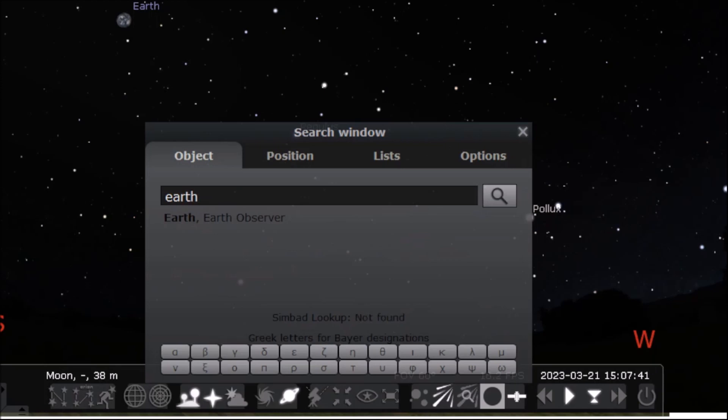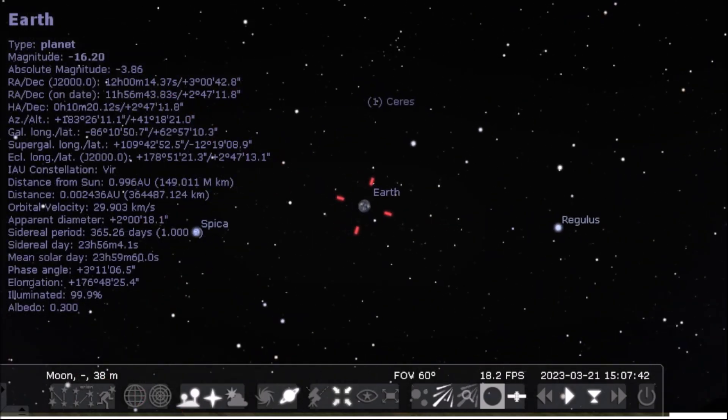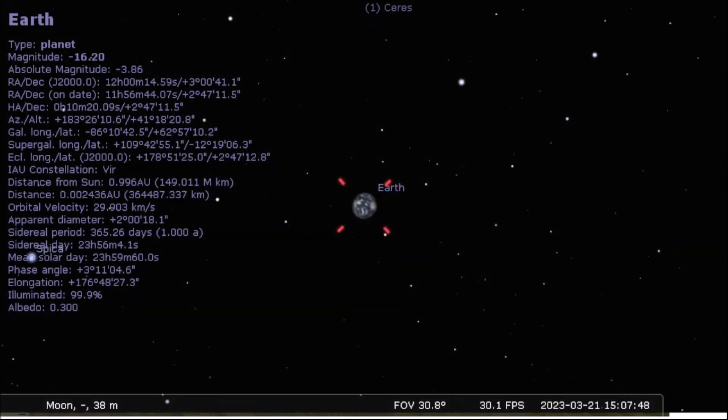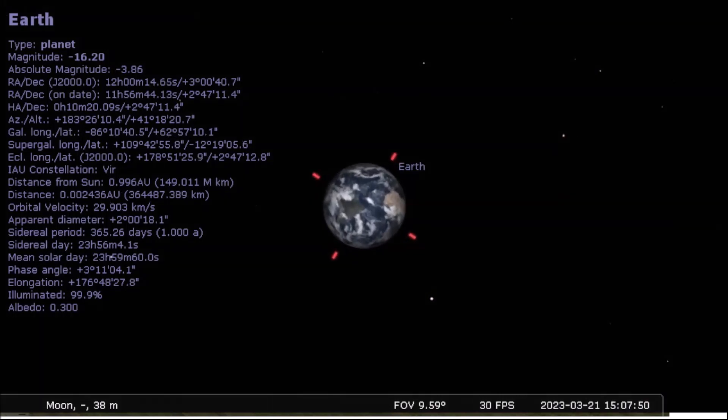The earth is the only world known so far to harbor life. There is nowhere else, at least in the near future, to which our species could migrate. Visit? Yes. Settle? Not yet.